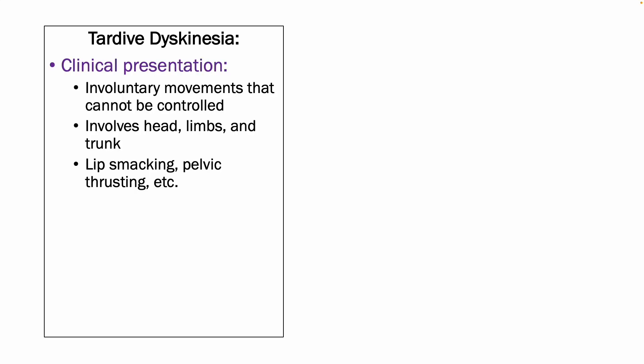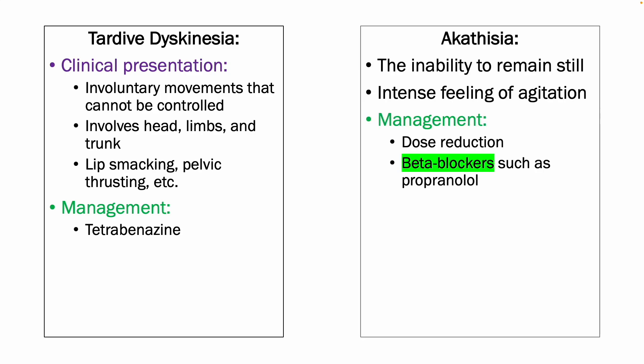Tardive dyskinesia is rhythmic involuntary movements of the head, limbs, and trunk. You see things such as lip smacking or pelvic thrusting, and it is treated with tetrabenazine.